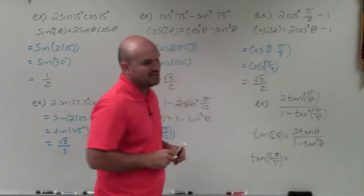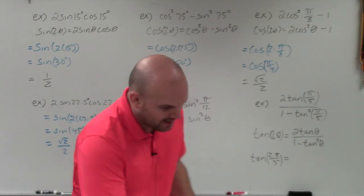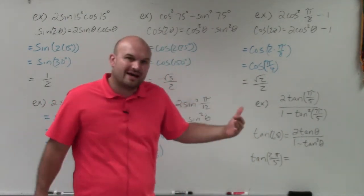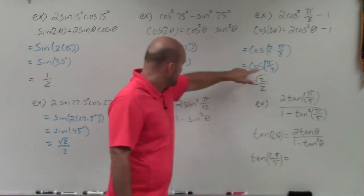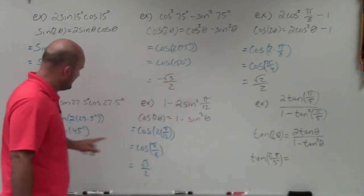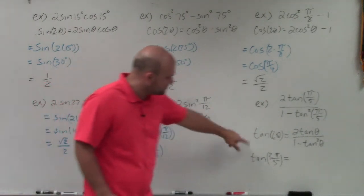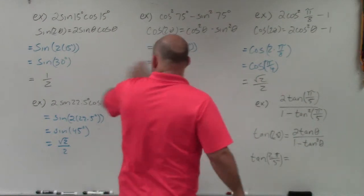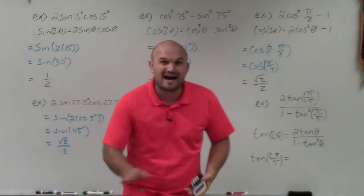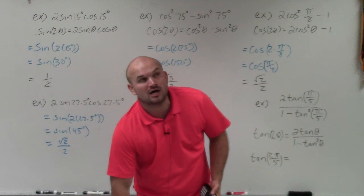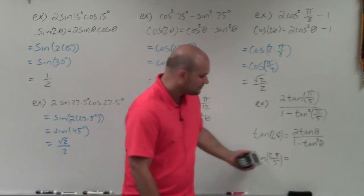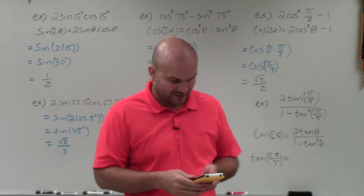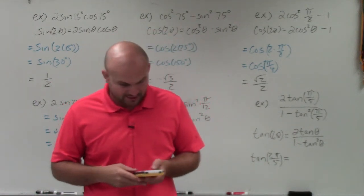I changed the denominator to 5 because the book I was using had problems with exact values. If you're just looking for the expression, tangent of 2π/5 is the answer. However, since 2π/5 is not a standard point on the unit circle, I'm going to find the approximate value using a calculator in radian mode.